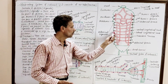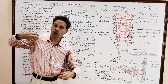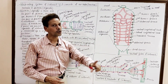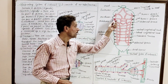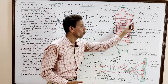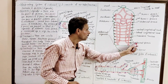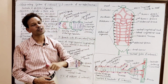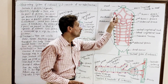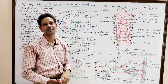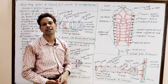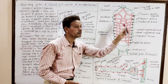Spiracles or stigmata are the openings of trachea which are present on both sides of the body. In the case of cockroach, there are 10 pairs of spiracles or stigmata. Out of these, two pairs of spiracles are in the thoracic region and the remaining eight pairs are in the abdominal region. The first pair of spiracles are present between prothorax and mesothorax, and the second pair between meso and metathorax.